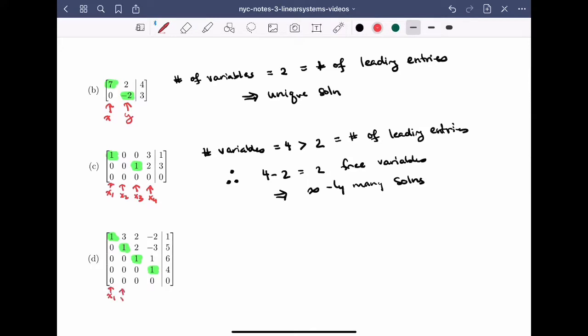So here, let's again write this down. Oh, I know the system's consistent because there's no leading entry in the last column, the column of constants. So in this case, the number of variables, well, I counted 4 of them. That's exactly the same as the number of leading entries. What does that mean? That means we have a unique solution.